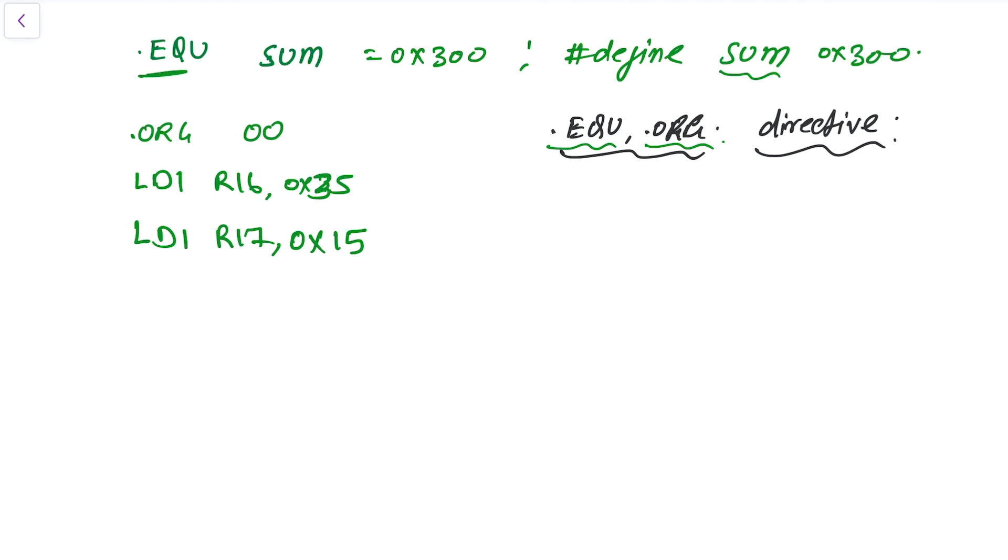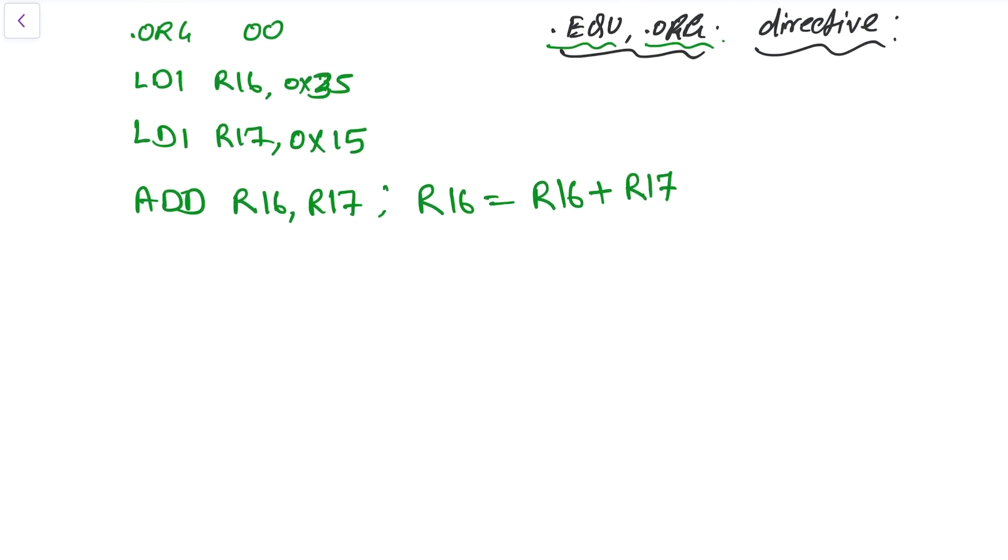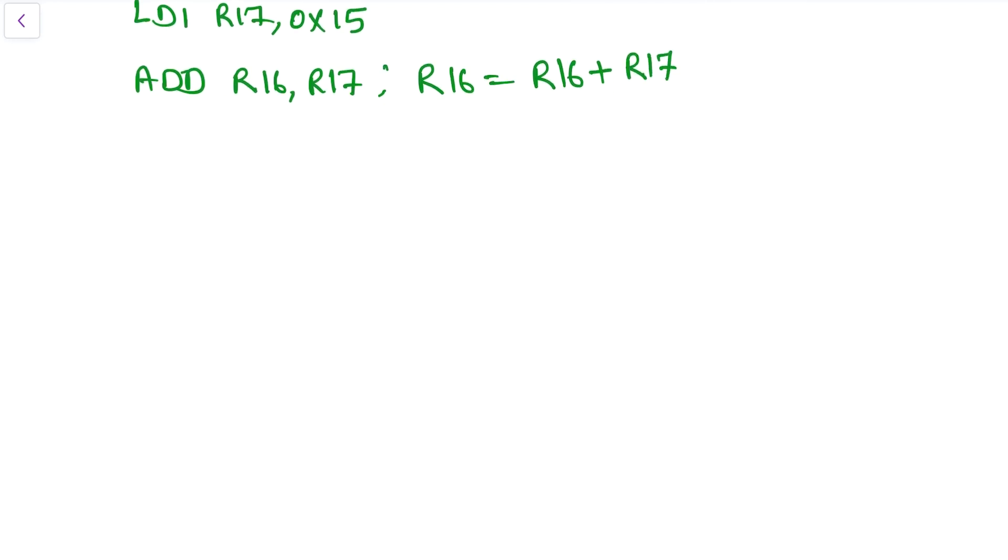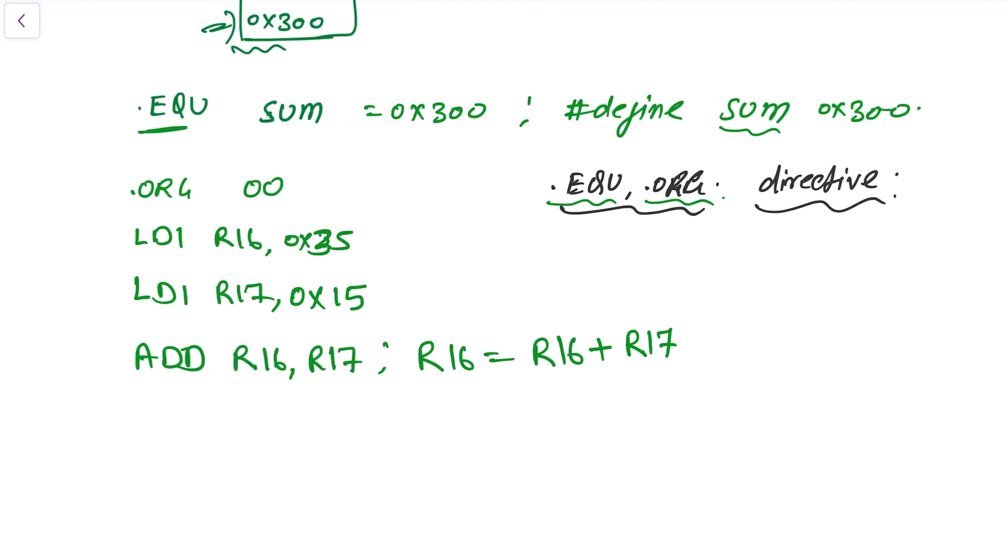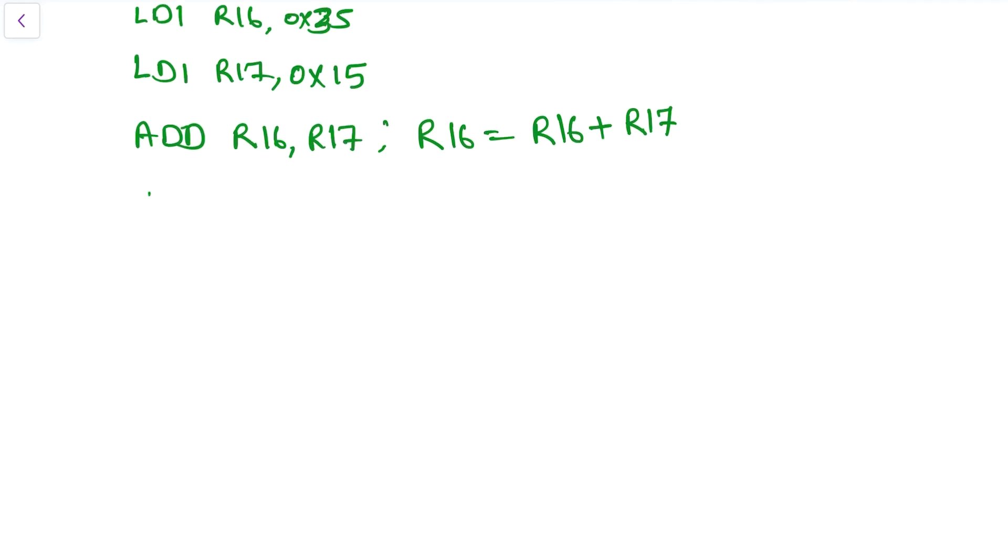And after that, let's say we are going to perform an addition operation R16 and R17. In this case, what will happen: R16 will be equal to R16 plus R17. Now let's say after that we are going to load this location. We are going to store the data at this location.